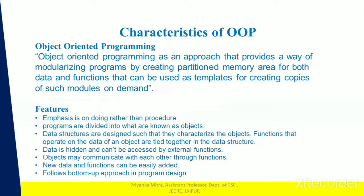Data structures are designed so that they characterize the objects. The functions that operate on the data of an object are tied together in a data structure. We have the data abstraction property, so data is hidden and cannot be accessed by external functions. We have message passing functionality so that objects may communicate with each other through functions. New data and functions can easily be added, which demonstrates the property of inheritance, and moreover it follows the bottom-up approach in program design.